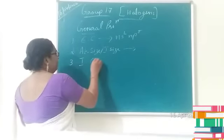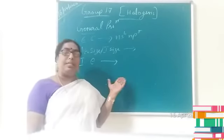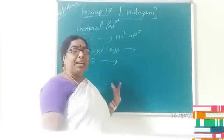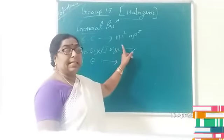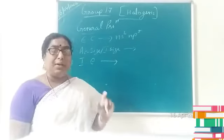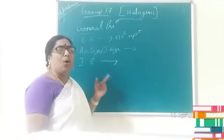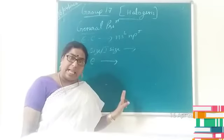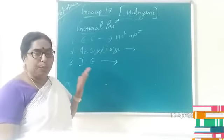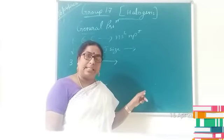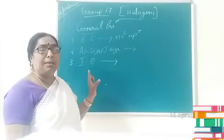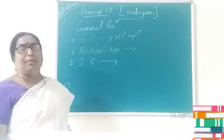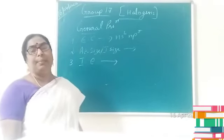Now let us consider ionization enthalpy. Comparing Group 17 with Group 16, due to very small size and maximum effective nuclear charge, halogens have very high ionization enthalpy. Their general electronic configuration is ns2 np5, meaning they need just one more electron to complete their octet, so they are not ready to lose electrons. Therefore, Group 17 possesses maximum ionization enthalpy, which decreases as we move down the group.